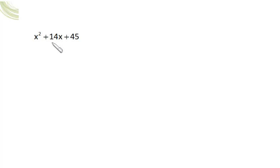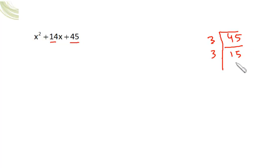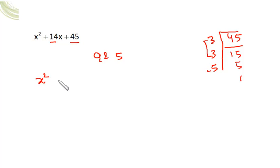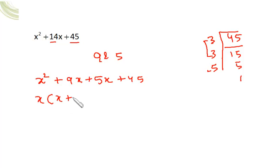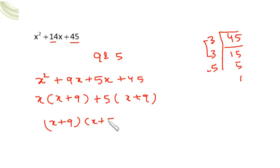For x²+14x+45: the middle term is positive and the constant is positive, so both numbers are positive, with sum=14 and product=45. Factorizing 45: 3×15, 3×5×3, 5×1. By hit and trial, 9 and 5 work: 9×5=45 and 9+5=14. So rewrite as x²+9x+5x+45, giving x(x+9)+5(x+9), which factors as (x+9)(x+5).